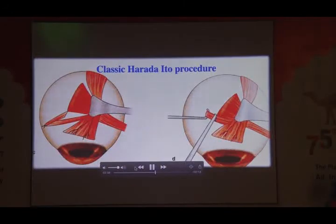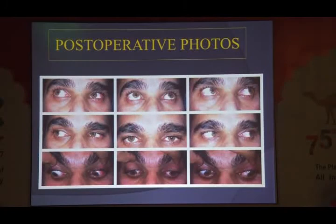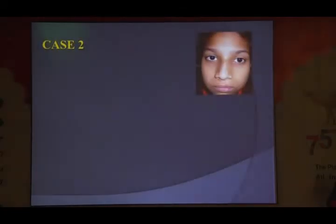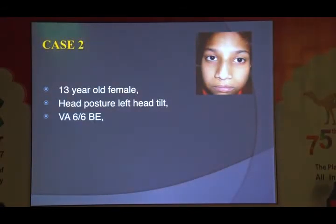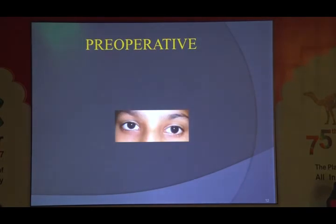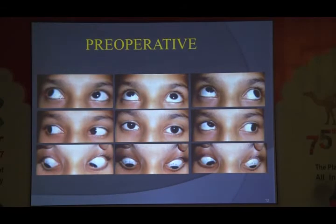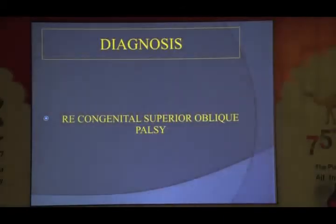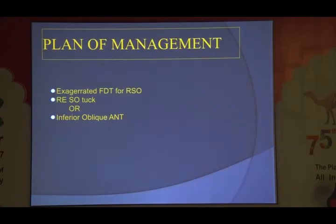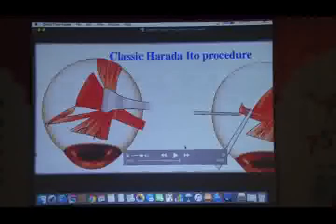Moving on to the next case: a 13-year-old female with a head tilt to the left side since birth. The pre-operative deviation shows right hypertropia in primary gaze increasing in secondary gazes to almost 25 diopters, and increasing in dextro-levo depression to almost 40 diopters. Diagnosis: right eye congenital superior oblique palsy. We need to do an exaggerated force-duction test for the superior oblique. If the superior oblique is tight, we need to do the superior oblique tuck; if not, we can do the inferior oblique weakening procedure.